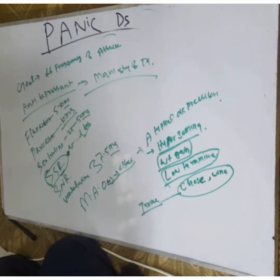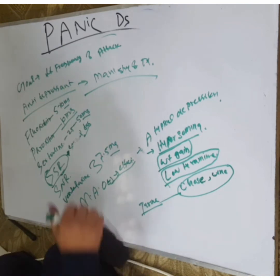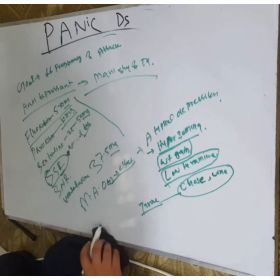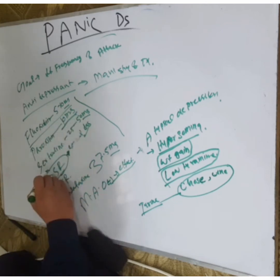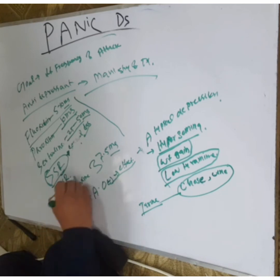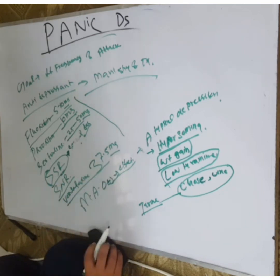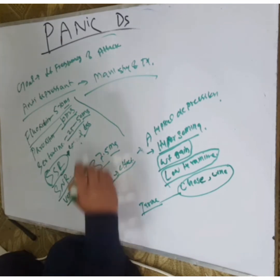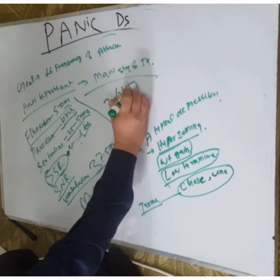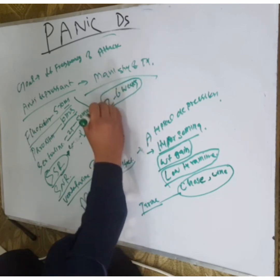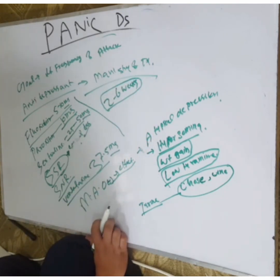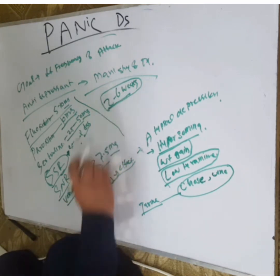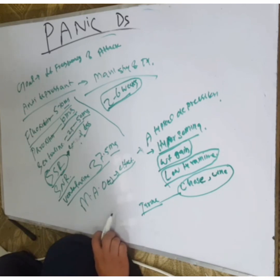Antidepressants typically take 2 to 6 weeks to become effective, so these drugs — fluoxetine, paroxetine, sertraline, venlafaxine — are prescribed for that duration. They work over weeks, not days.